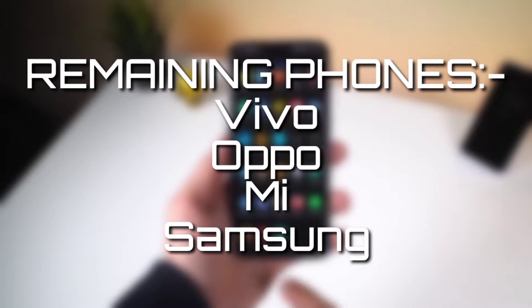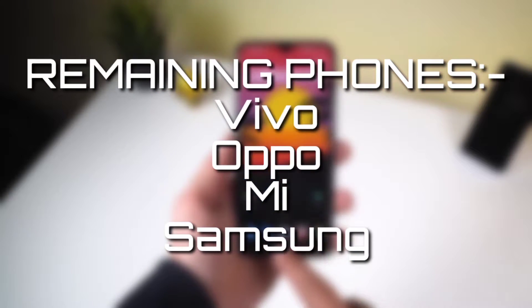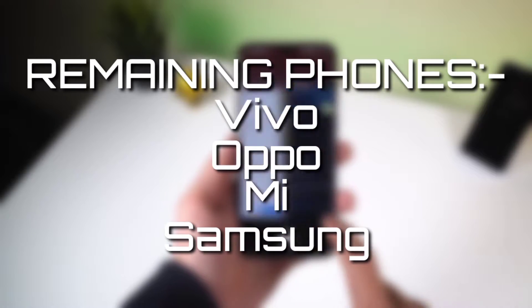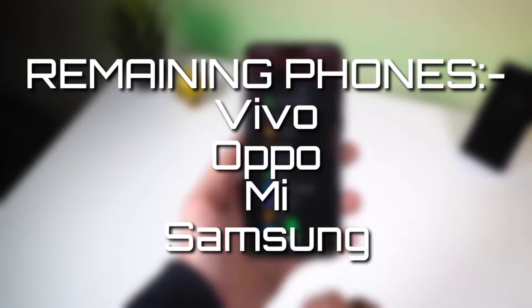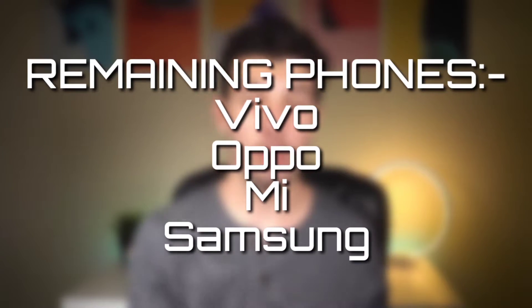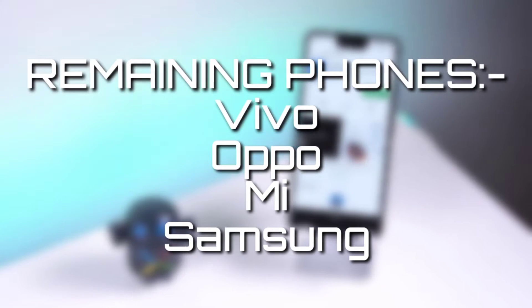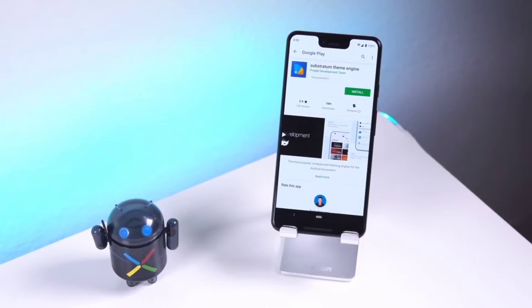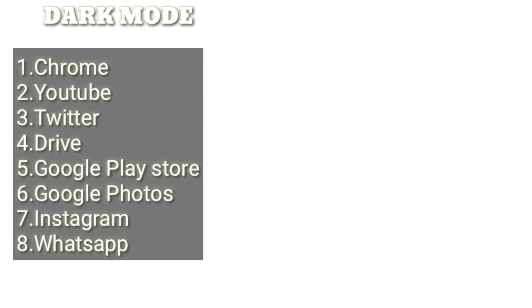Talking about other phones like Vivo, Oppo, Mi, and Samsung — you cannot actually enable a system-wide dark theme on these phones, but you can enable dark theme in most of the apps. Before proceeding, make sure to update all of your Google apps to the latest version.